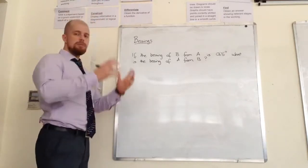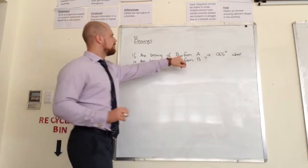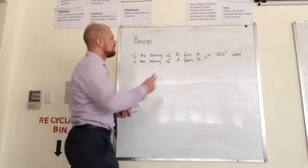Now, bearings are measured clockwise from north, always. So from A is where we're going to start, because we know the bearing of B from A.